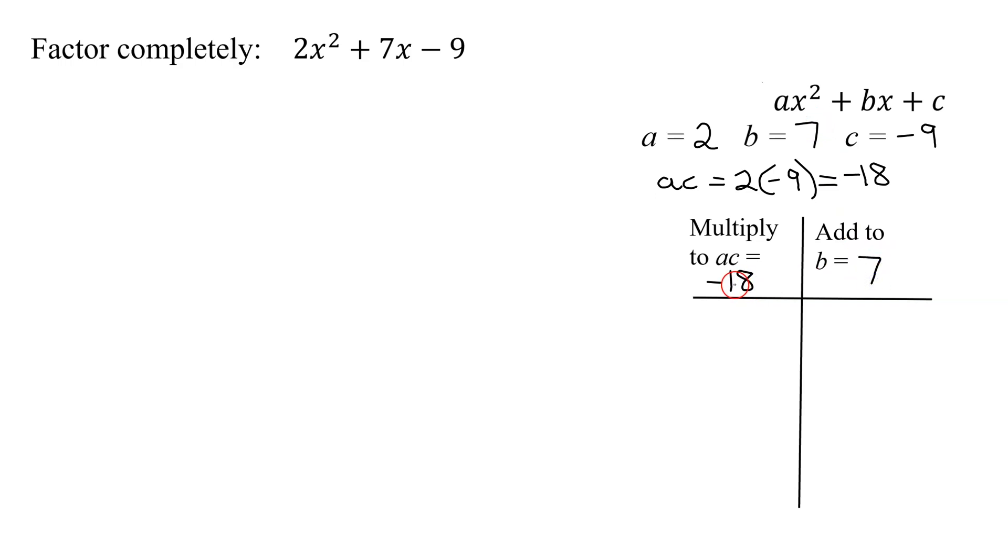Since the 2 numbers I'm looking for multiply to a negative, it means they have to have different signs. And if they add to a positive, the number with the largest absolute value has to be the positive number. So hopefully these numbers come to you quickly, but I'm just going to show you the systematic way to do it. I have negative 1 and 18 that definitely multiply to negative 18. Negative 1 plus 18 adds up to positive 17, not what I'm looking for.